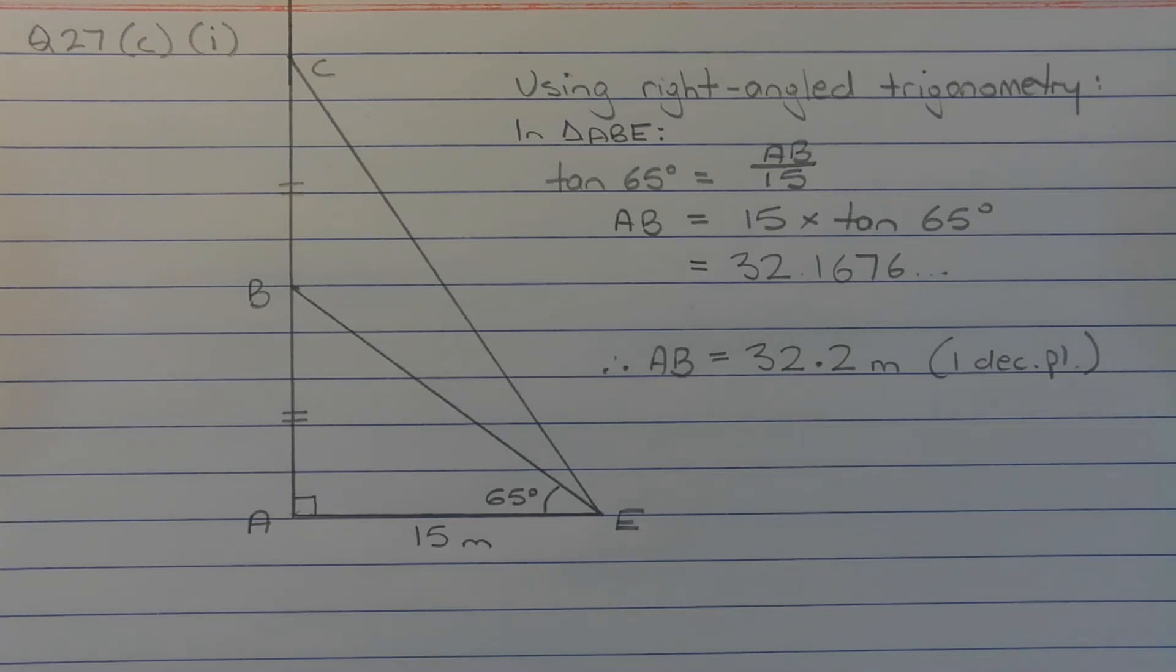So applying right angle trigonometry and recognizing that we want to find the opposite side knowing the adjacent side, we will apply the tangent ratio, or the tan ratio.